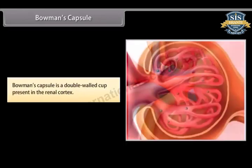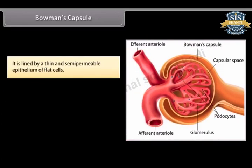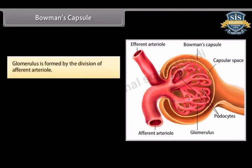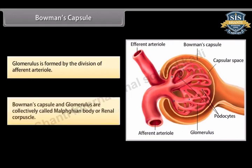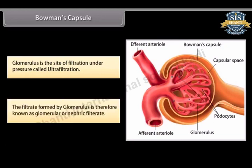Bowman's capsule is a double-walled cup present in the renal cortex, lined by a thin and semi-permeable epithelium of flat cells. There is a group of blood capillaries called the glomerulus in the cavity of Bowman's capsule. Bowman's capsule and glomerulus are collectively called the Malpighian body or renal corpuscle. The glomerulus is the site of filtration under pressure, called ultrafiltration.